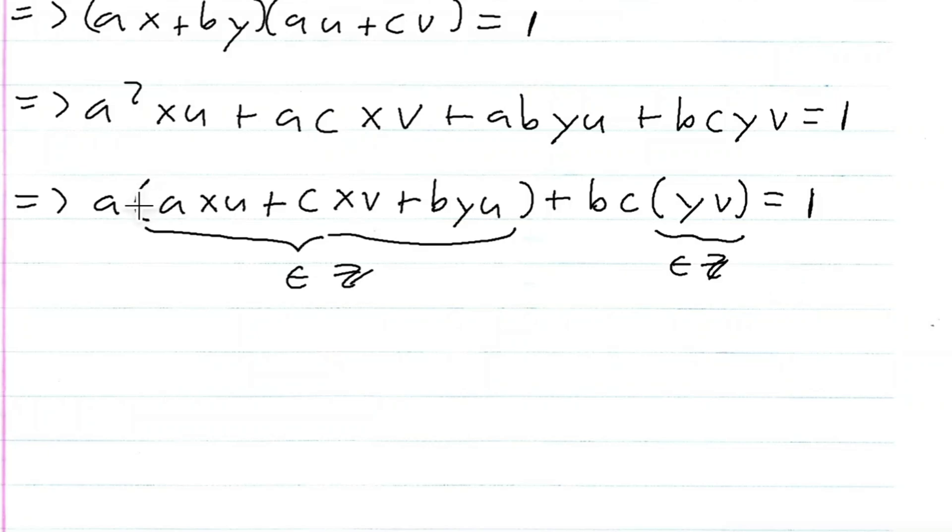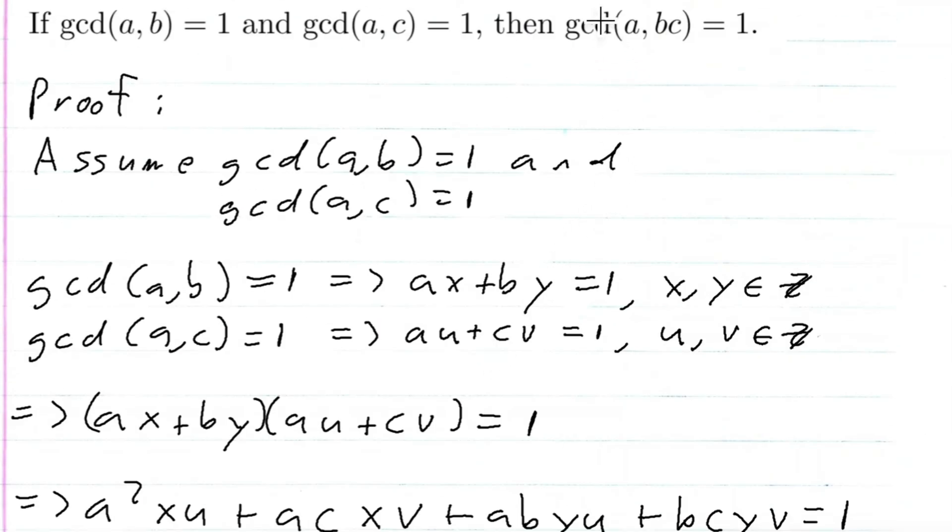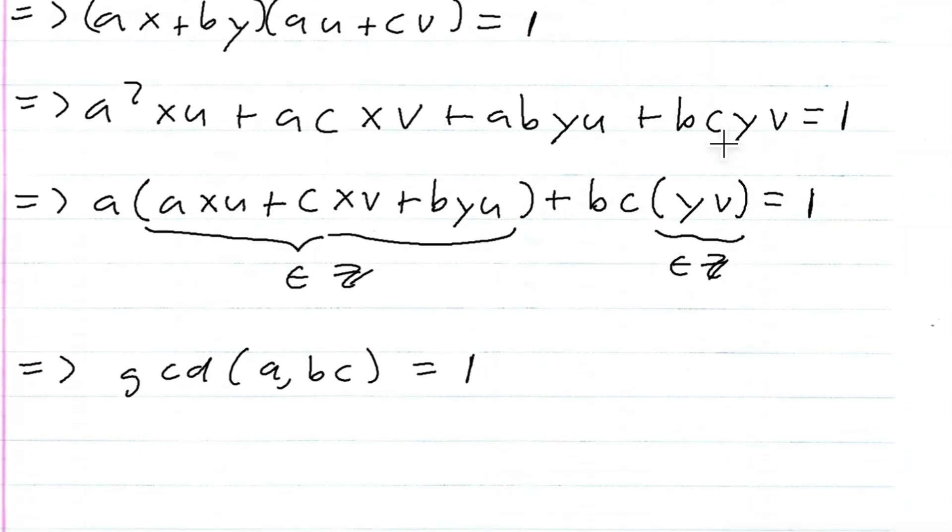So what I have here is a linear combination of A times an integer plus BC times an integer equals to one. So, by that theorem, I have that the GCD of A and BC is equal to one, which is exactly what I wanted to show. That is the proof.